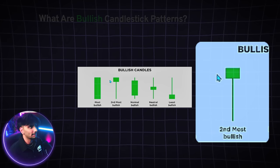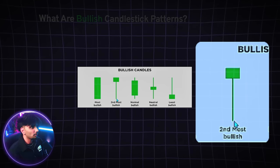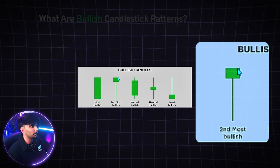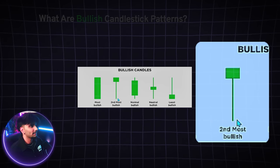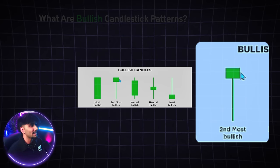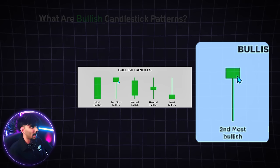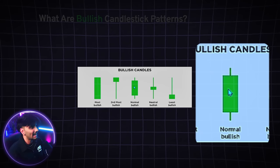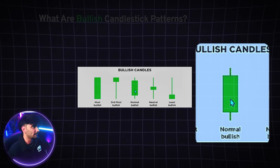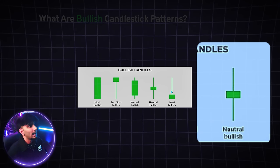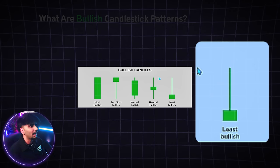The hammer candle: we open up on the candle, sellers try to bring it all the way back down, but buyers came in very strong and we closed at a new high. This signifies that sellers did try to bring the stock to the lows, but buyers are in extreme control because we closed at new highs. The third most bullish candle is the one we just discussed. And then there is a neutral candle, and finally the least bullish candle.